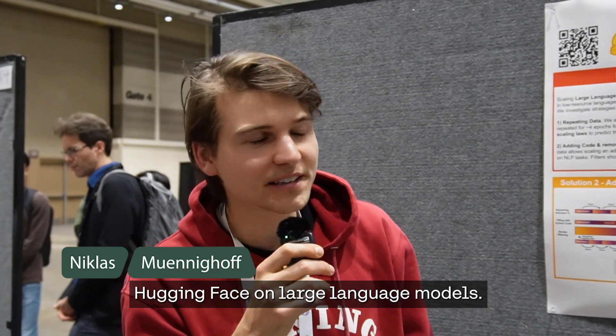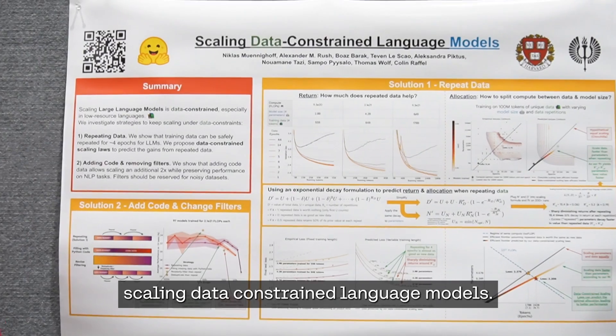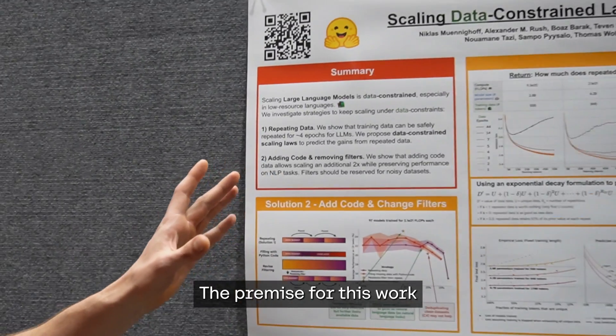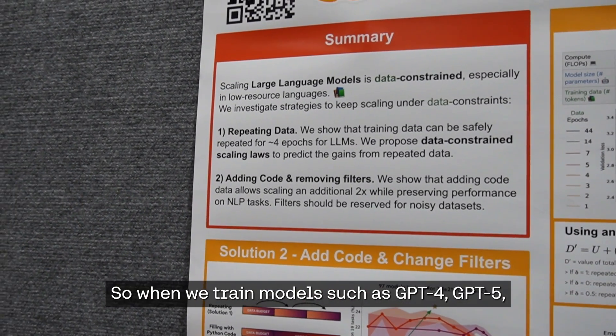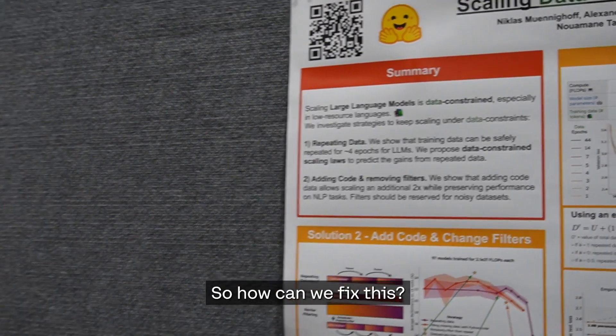I'm Niklas and I've been working with Hugging Face on large language models. For this paper, we investigated scaling data-constrained language models. The premise is that we are data-constrained—when we train models such as GPT-4 and GPT-5, we're running out of data. So how can we fix this?